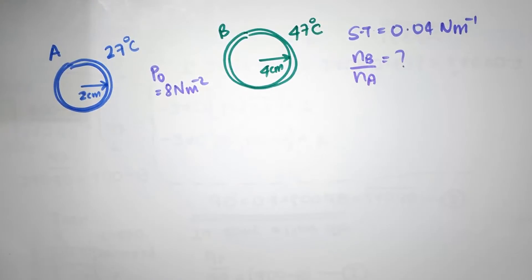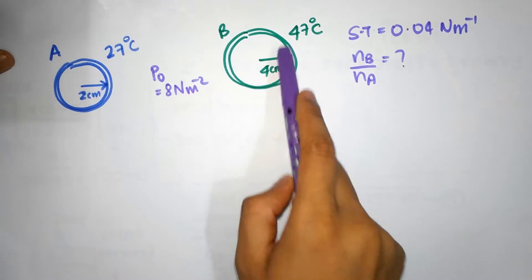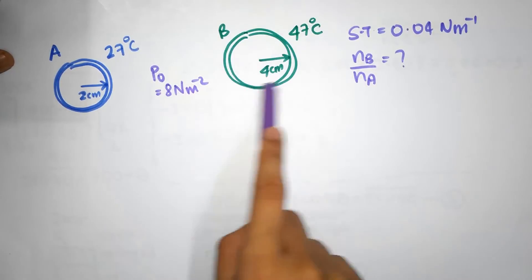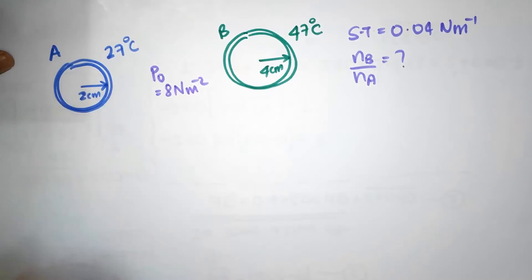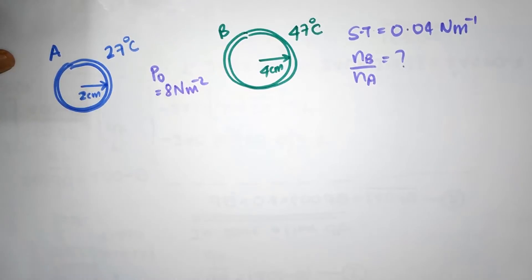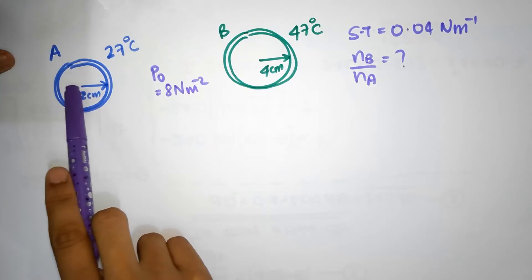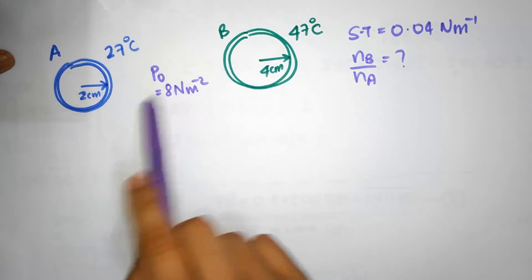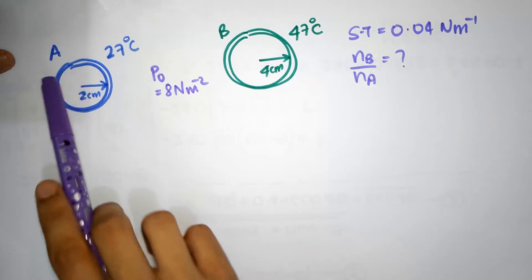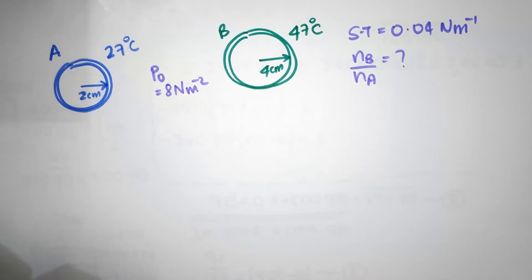So what's the logic we are going to use? First, let's understand why there would be different numbers of moles. One reason is obviously because we have more volume in one bubble versus the other, but something else that matters is the pressure. Because of surface tension, the pressure inside the soap bubble is not the same as the pressure outside.